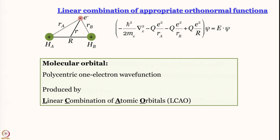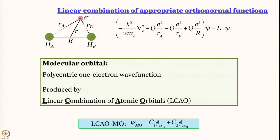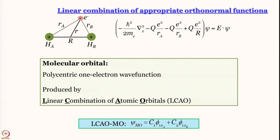LCAO, as it is called, is what we are going to use. For H2+ the only atomic orbitals we need to consider are the 1s orbitals, because the electron will be in the lowest energy state and there is an energy gap between 1s and 2s. This invokes an important principle: only orbitals of appropriate energies — and later we will say correct symmetries — will participate in the linear combination. Without comparable energies and correct symmetry, they do not participate. The energy difference between 1s and 2s is too large, so bringing in 2s makes no sense at our level.